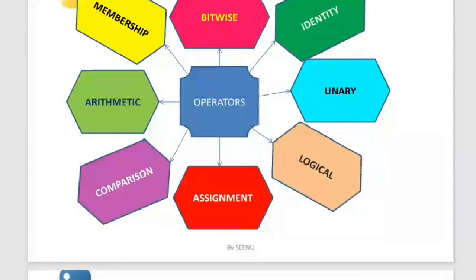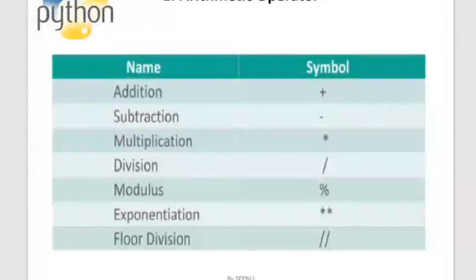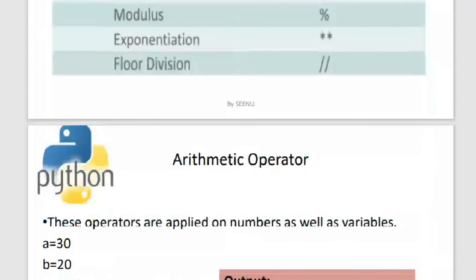Coming to the arithmetic operators — I have already briefed you about arithmetic operators in the previous classes, and we have seen the output for each one. The addition operator performs addition between two variables, subtraction does subtraction, multiplication, division, modulus gives the remainder, exponential powers a number, and floor division gives the quotient.